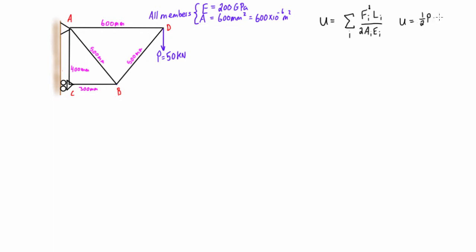Once we get that, then we just plug it into this expression which is U is equal to one-half P. In this case we're looking for the deflection here at point D, so this is going to be YD. Then we can rearrange that where we get YD is just going to be equal to two times the strain energy over the applied load.